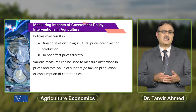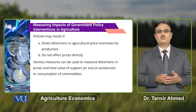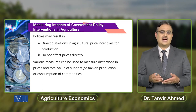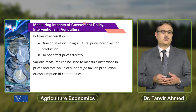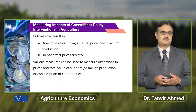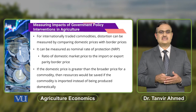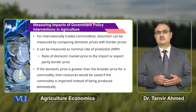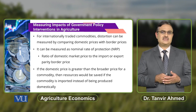When we talk about measures, there are various measures that can be used to measure the distortions in prices. The total value of support represents a tax on the production and consumption of commodities. For internationally traded commodities, distortions can be assessed by comparing domestic prices with border prices.